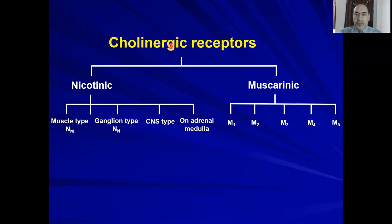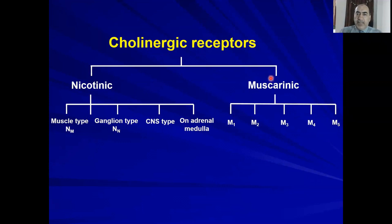Cholinergic receptors are the receptors for acetylcholine and agonist drugs — drugs that can act like acetylcholine. These receptors are subdivided into nicotinic and muscarinic receptors. Nicotinic are further subdivided into the muscle type NM, ganglion type NN, CNS type, and those expressed on the adrenal medulla. Muscarinic receptors are further subdivided into M1, M2, M3, M4, and M5.